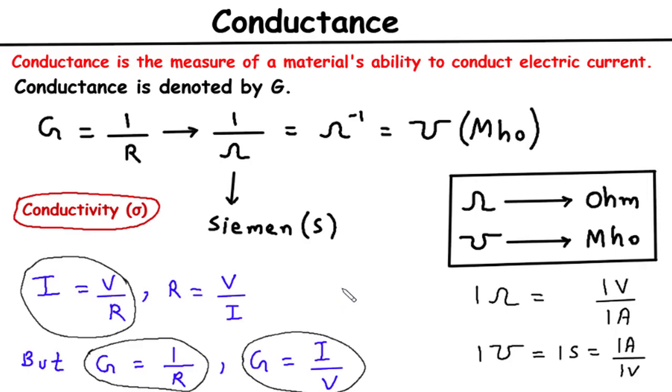In contrast, resistance represents the opposition to the flow of current. Conductance provides a convenient way to quantify the ease with which current can pass through a conductor. Several factors influence the conductance of a material.